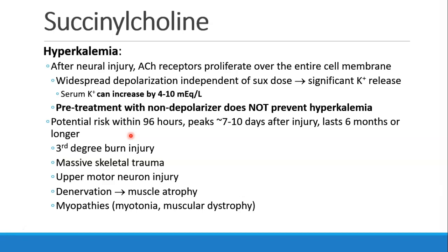Patients at risk for this catastrophic hyperkalemic response include those who have had third-degree burns, massive skeletal trauma, upper motor neuron injuries like strokes or spinal cord injuries, denervation leading to muscular atrophy, and myopathies like myotonia or muscular dystrophy.